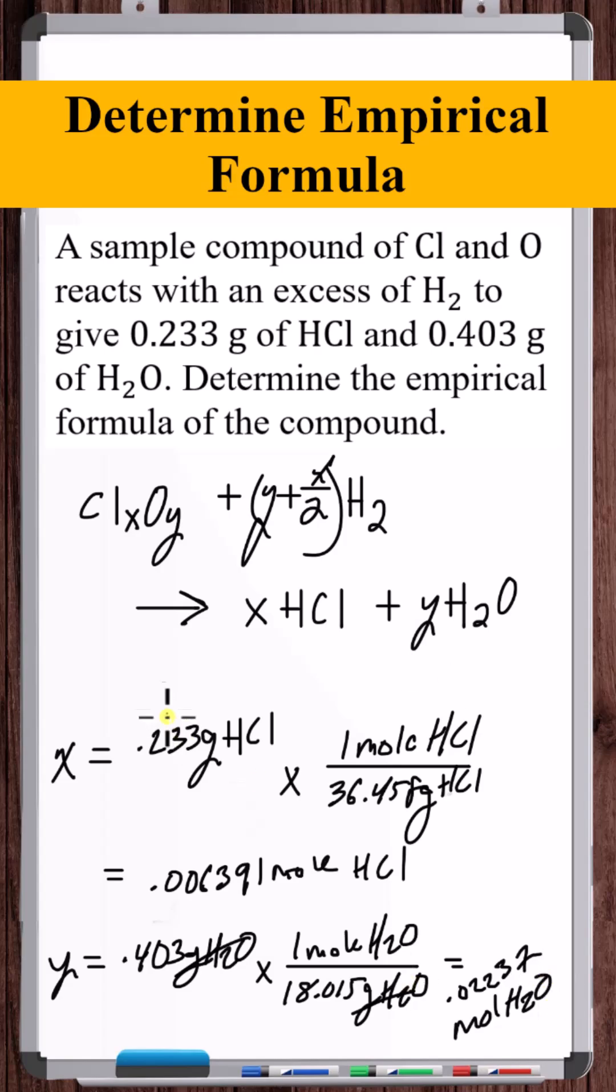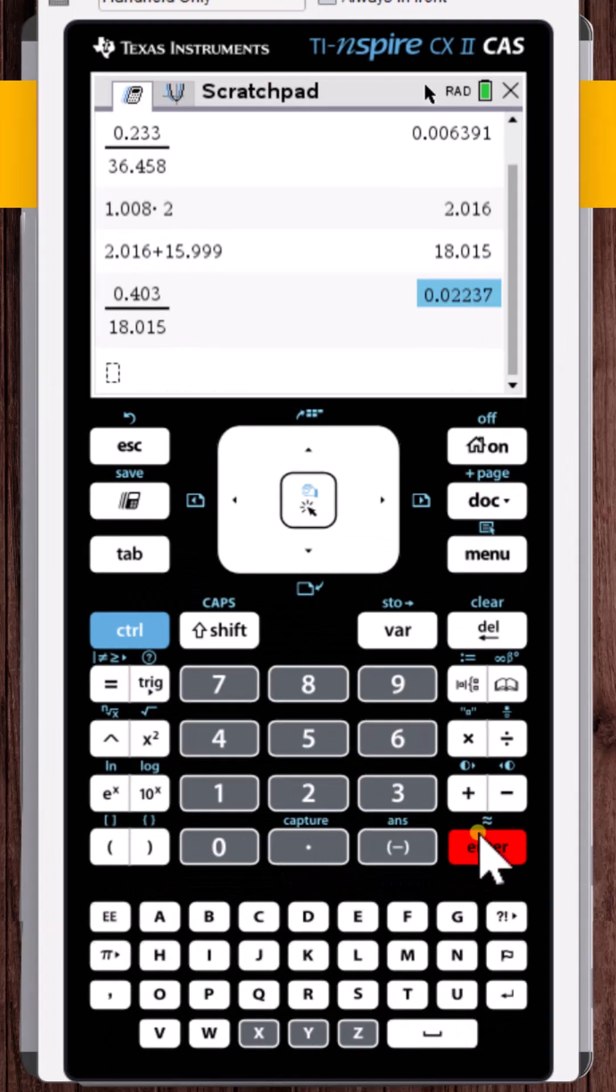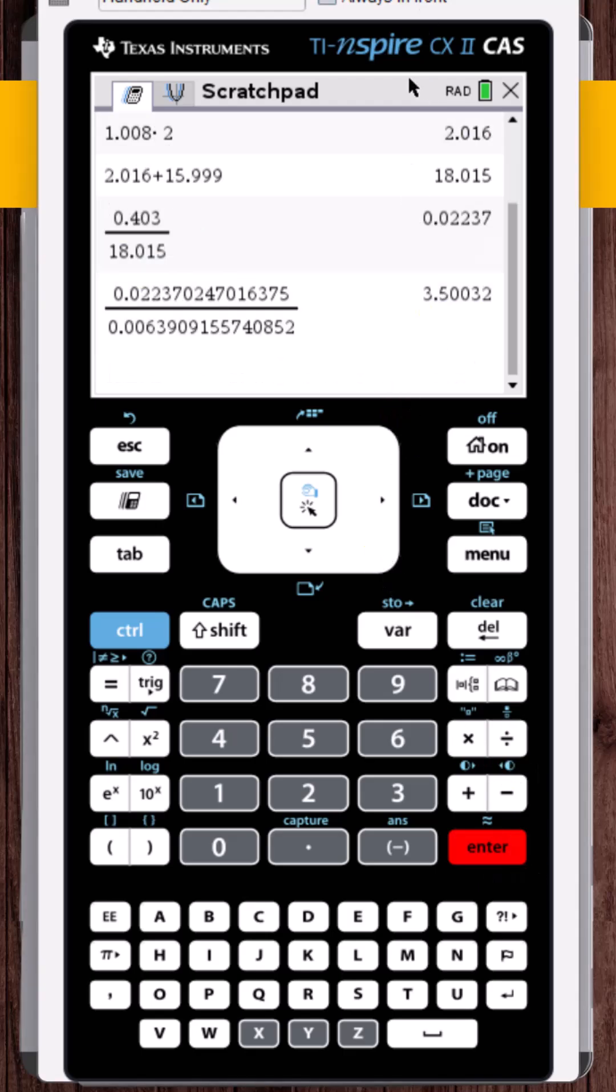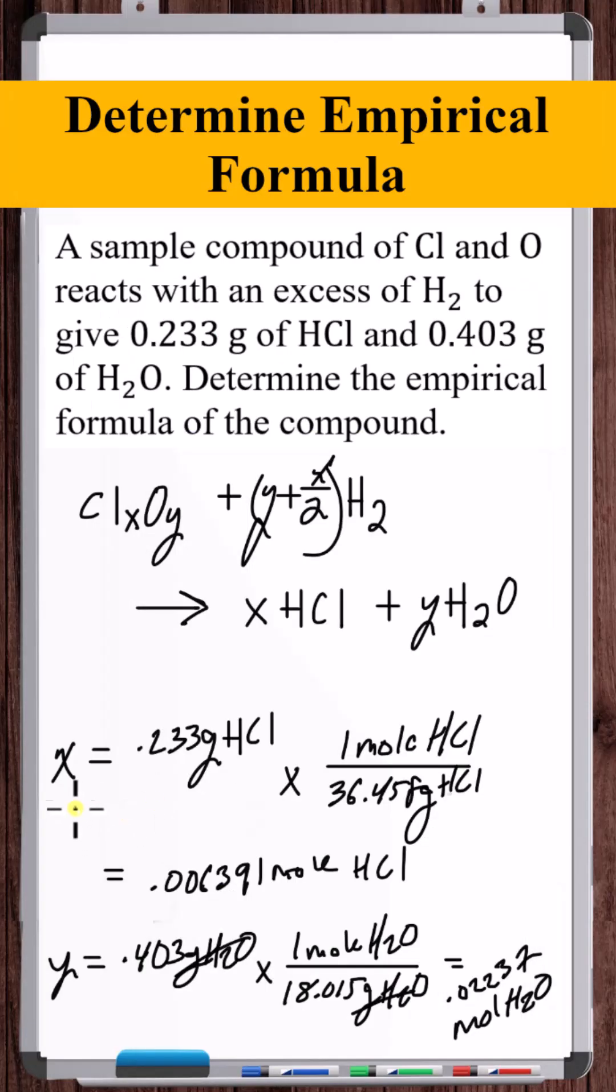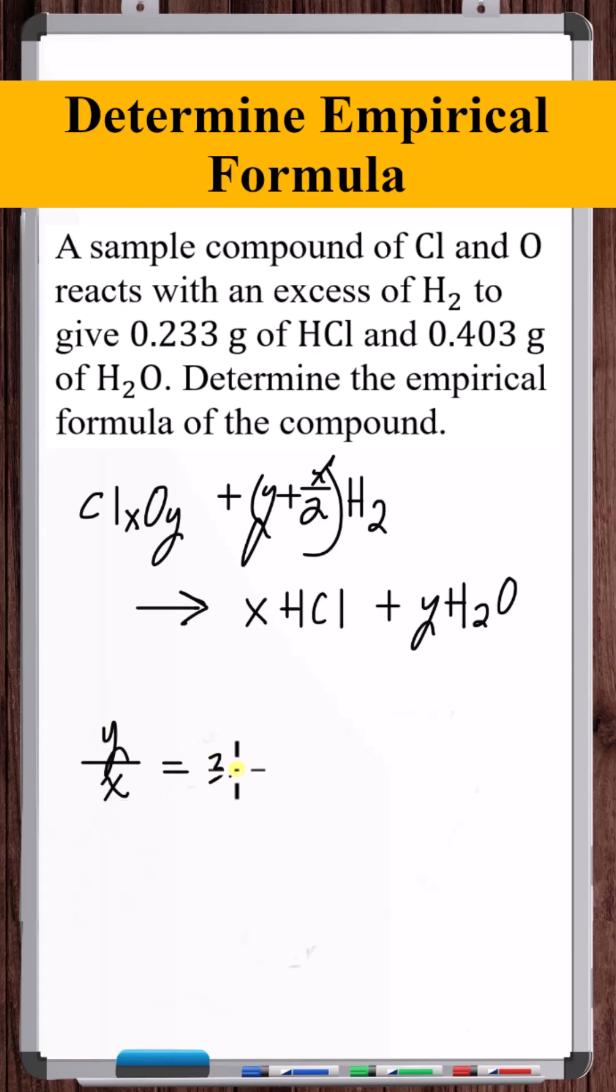Okay, now we just need to divide Y by X. 3.5, which is 7 over 2. So 7 and 2 are the smallest possible integers. Therefore, X is 2, Y is 7. The empirical formula is Cl2O7.